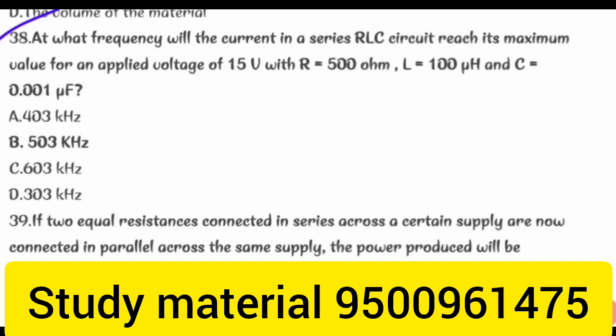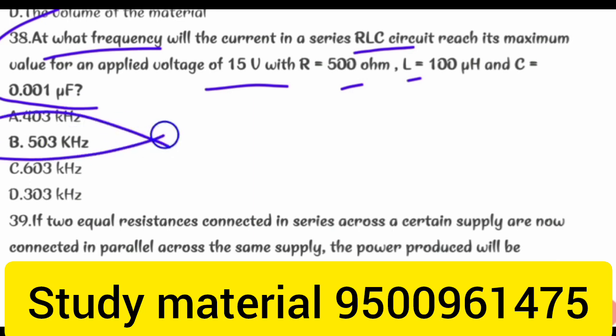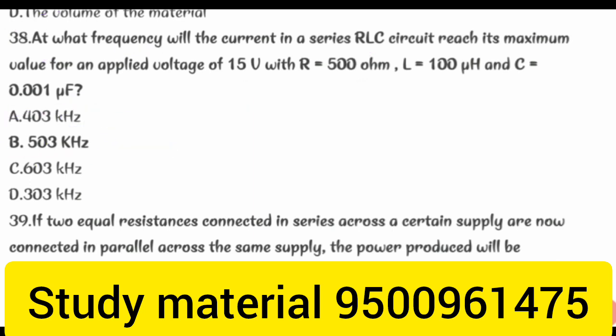At what frequency will the current in a series RLC circuit reach its maximum value for an applied voltage of 15 V with R equal to 500 Ohm, L equal to 100 uH, and C equal to 0.01 uF? Answer: 503 kHz.